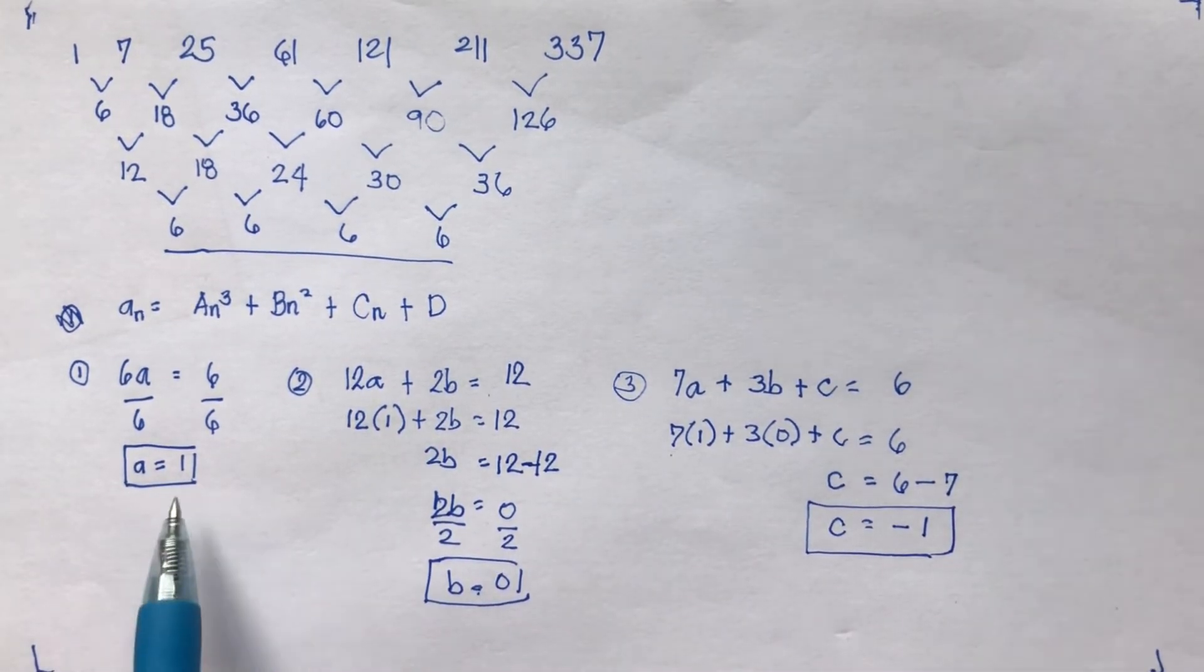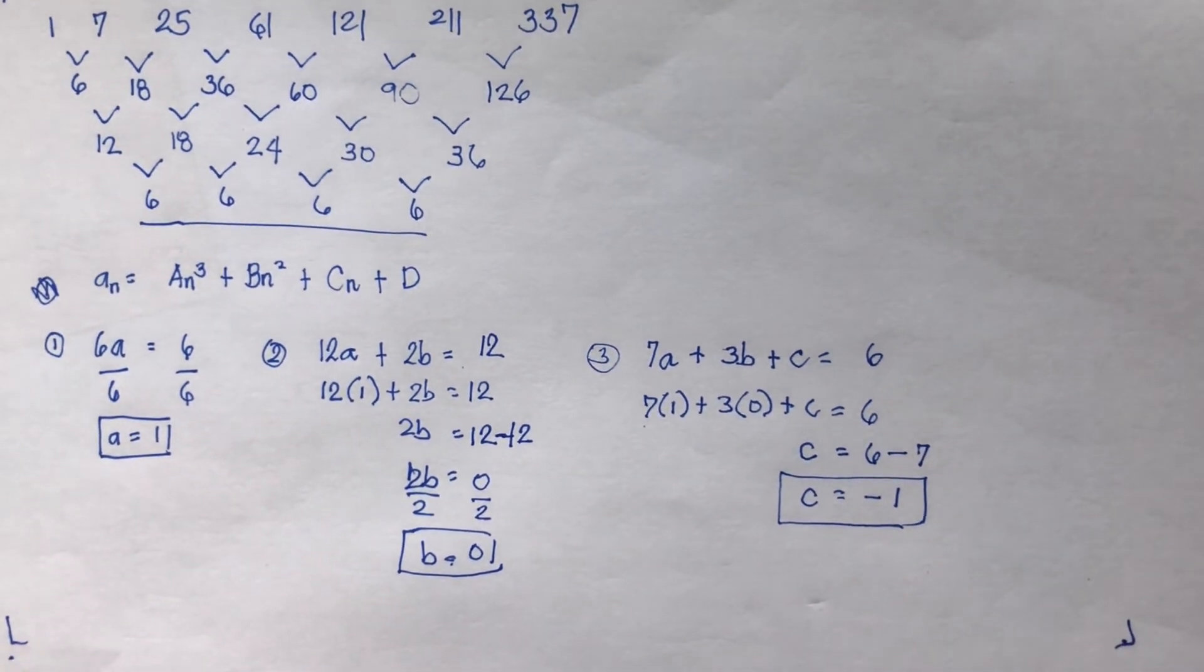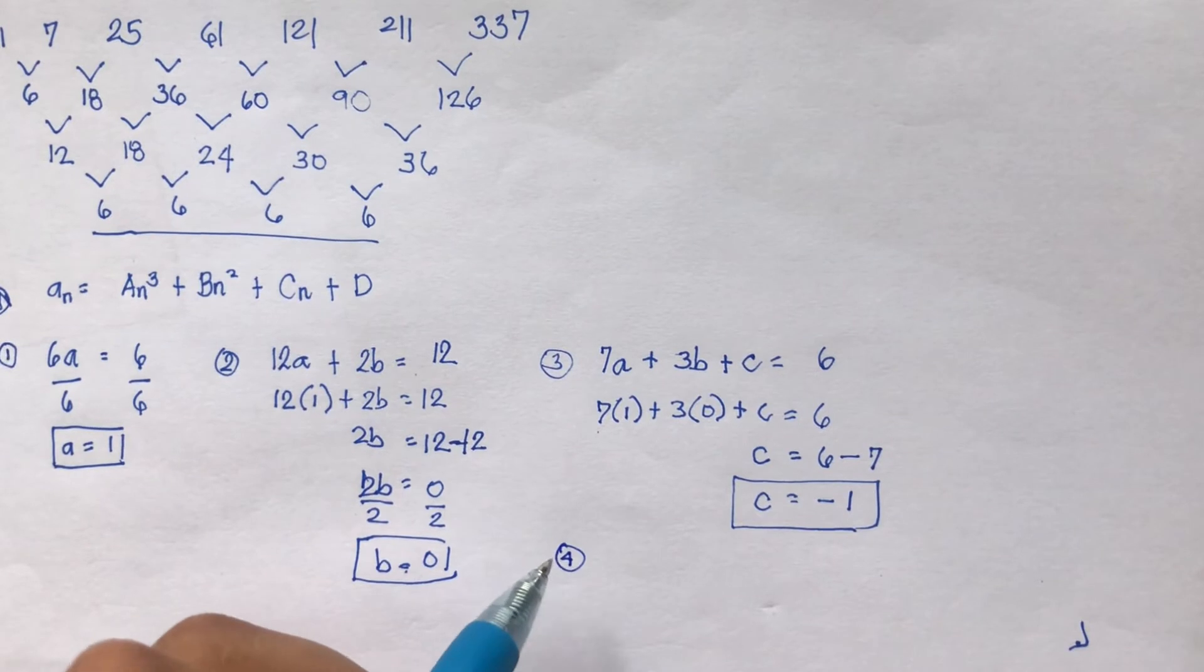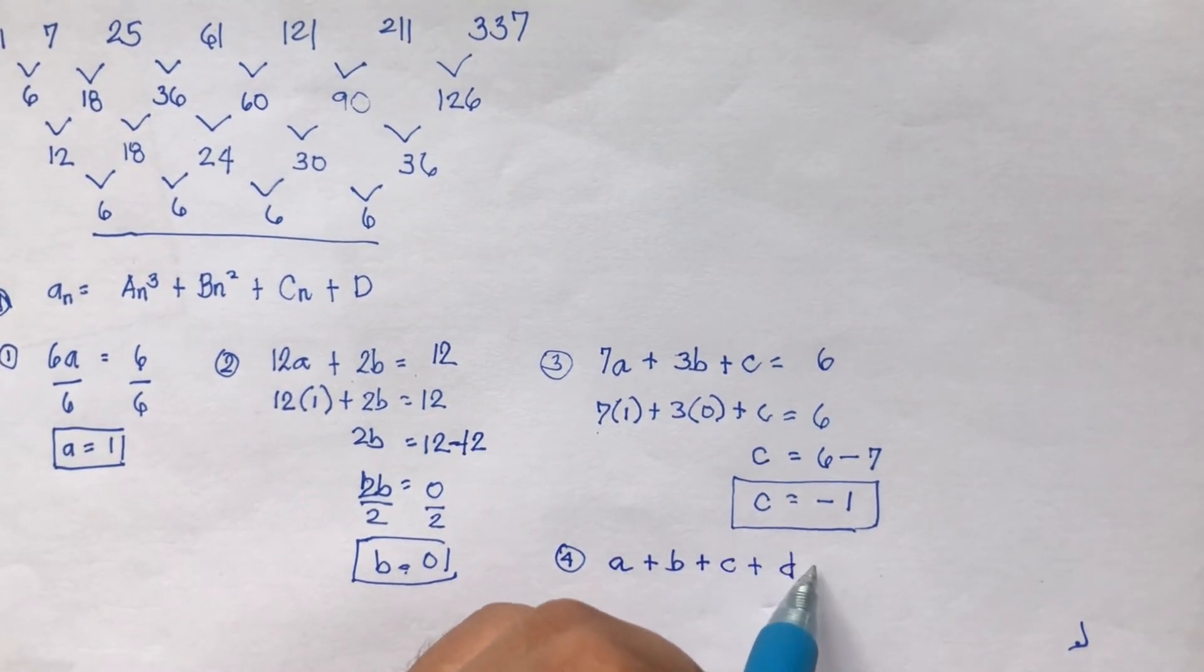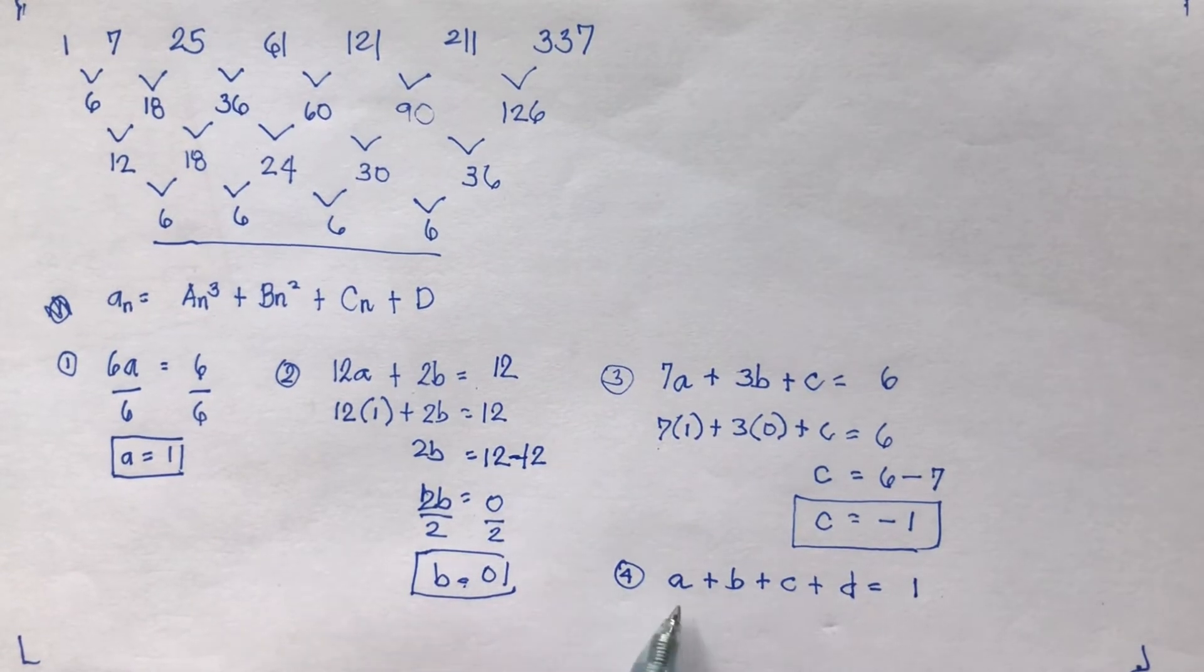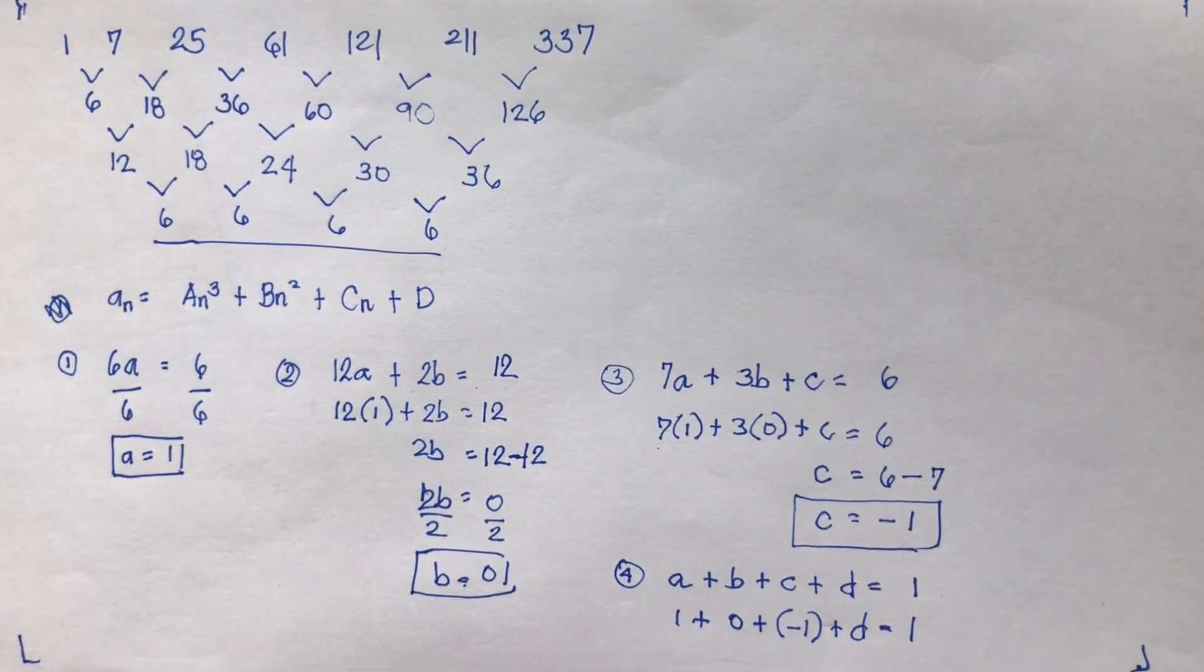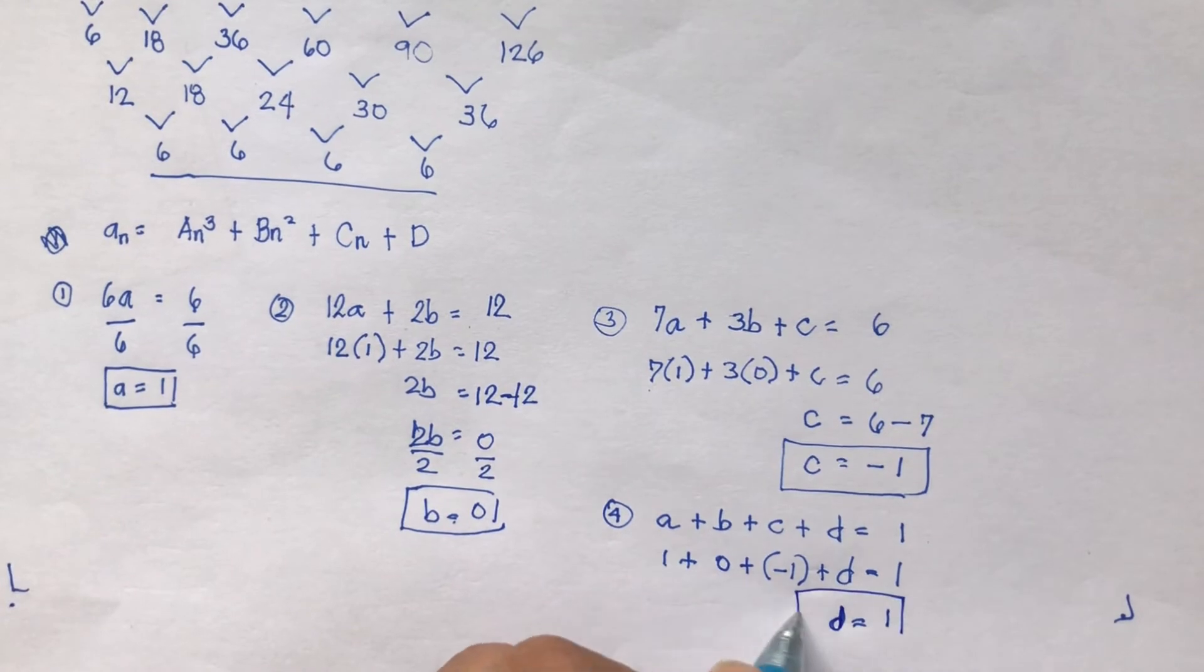You have a, you have b, you have c. Let's solve now for d using the fourth formula. The fourth formula goes a plus b plus c plus d equals the first term, which is 1. So a is 1, b is 0, c is negative 1, then plus d is equal to 1. 1 plus 0 plus negative 1 is 0, leaving only d, which is 1.